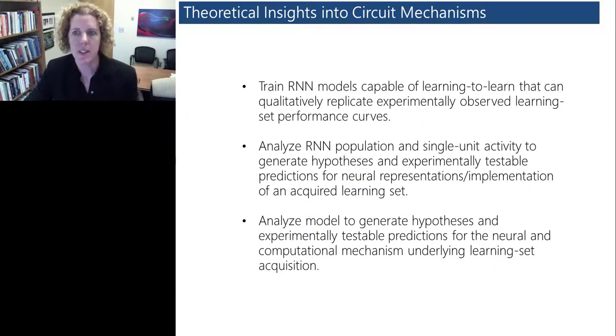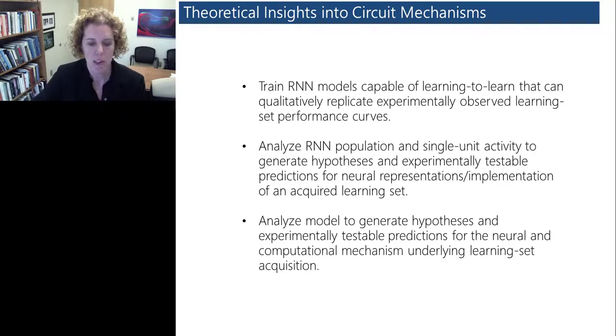All of this work feeds into some of the work in Xiaoxing Wang's lab, which will help in providing theoretical insights into the circuit mechanisms that support this work. Some of the goals involve training recurrent neural network models that are capable of learning to learn that can qualitatively replicate our experimentally observed learning set performance curves. They'll be analyzing these recurrent neural network population and also the single unit activity, which will allow them to generate hypotheses and experimentally testable predictions that we'll be able to test in our recordings again in monkeys and humans.